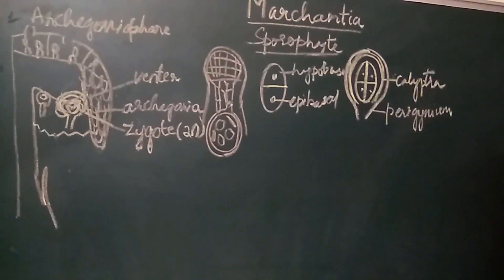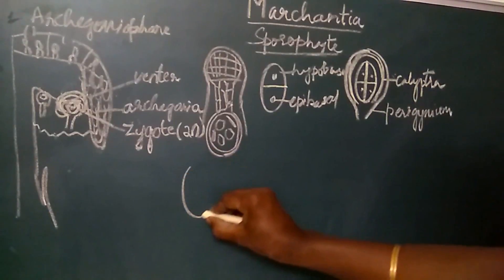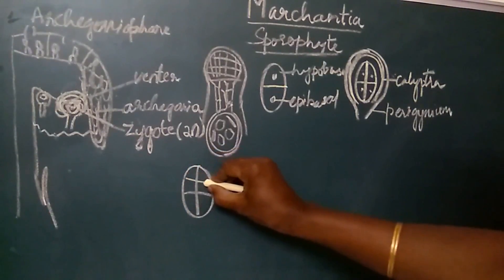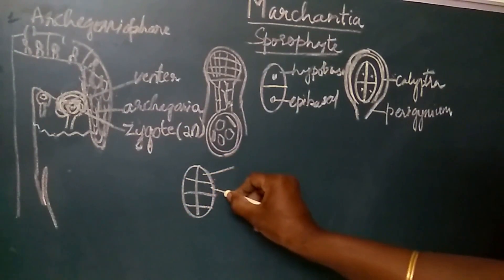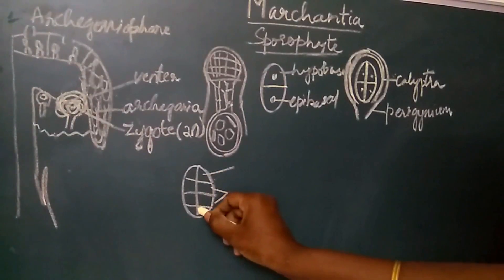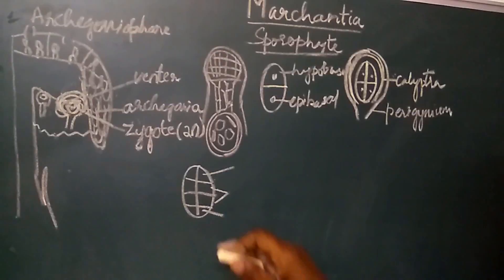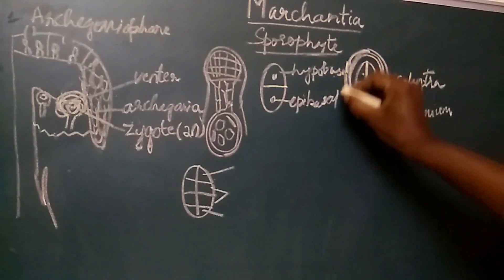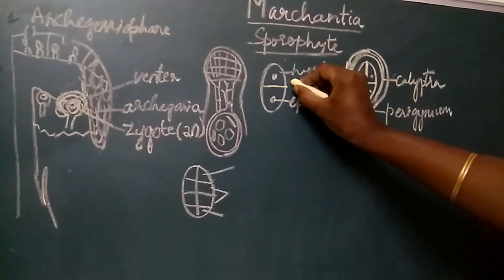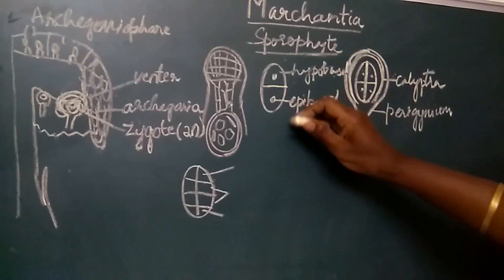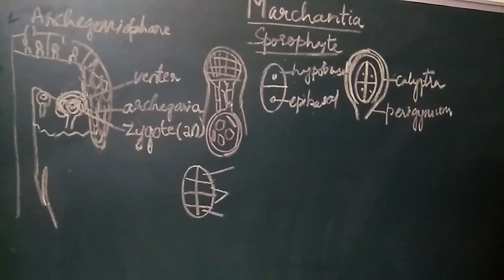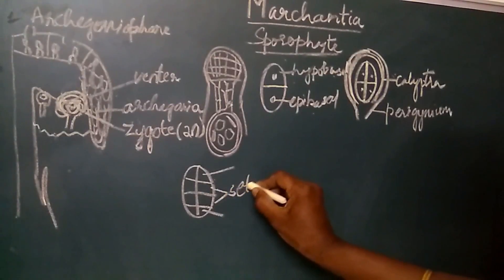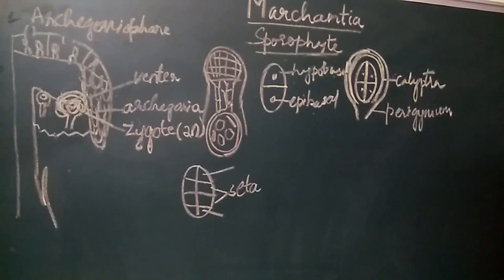At the quadrant stage, the cells again divide by a number of divisions and start developing into the foot. The central two cells start developing into the seta, and the uppermost cells develop by a number of divisions into the capsule. The hyperbasal cell divides to form the foot and a part of the seta. The epibasal cell divides to form the capsule and the remaining part of the seta. Thus the seta develops partially from the hyperbasal cell and partially from the epibasal cell.